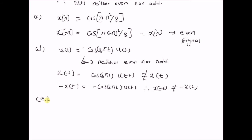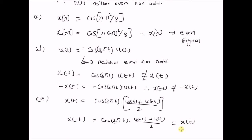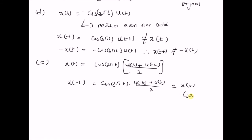However, when you multiply two even signals, the product is also an even signal. For example, x(t) = cos(2πt)·[u(t) + u(−t)]/2. By definition, [u(t) + u(−t)]/2 is an even signal, and cos(2πt) is also even, so their product is even. We can verify: x(−t) = cos(2πt)·[u(−t) + u(t)]/2, which equals x(t). Therefore, x(t) is an even signal.